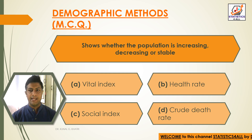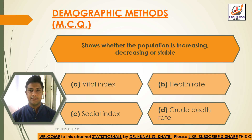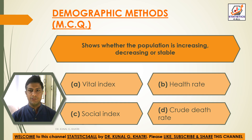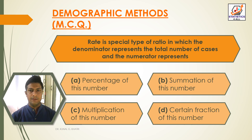Next question: which option shows whether the population is increasing, decreasing, or stable? Option A: vital index, Option B: health rate, Option C: social index, and Option D: crude death rate. The answer is Option A — vital index — which shows whether the population is increasing, decreasing, or stable.